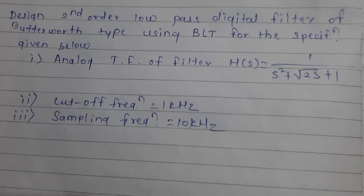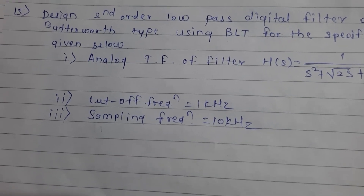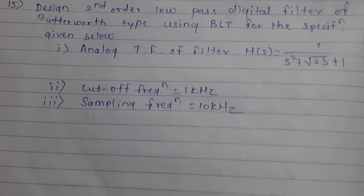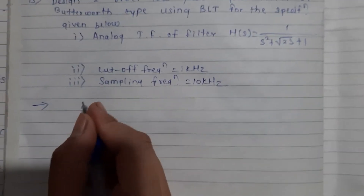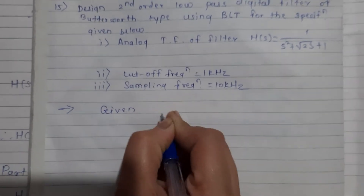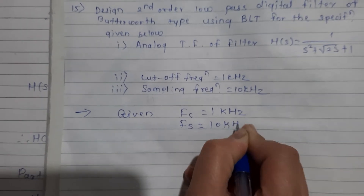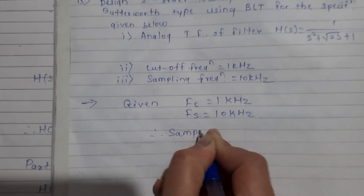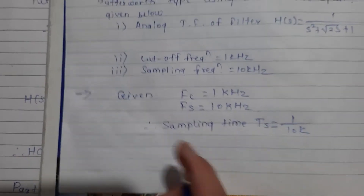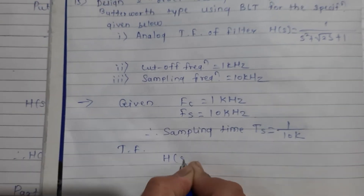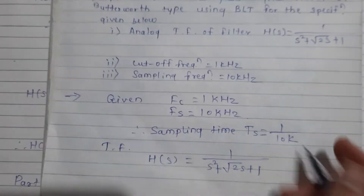Design a second-order low-pass digital filter using BLT, that is bilinear transformation, for the following specifications: the analog transfer function H(S) is given; cutoff frequency is 1 kHz; and sampling frequency is 10 kHz. The given transfer function is H(S) equals 1 divided by (s squared plus square root of 2 times s plus 1). This is equation 1.